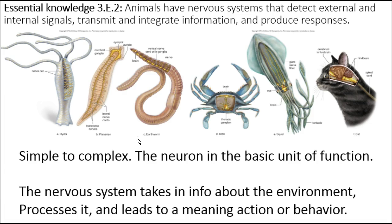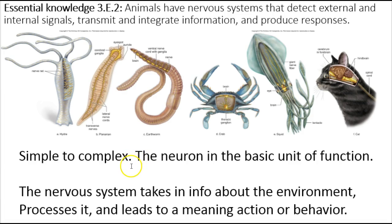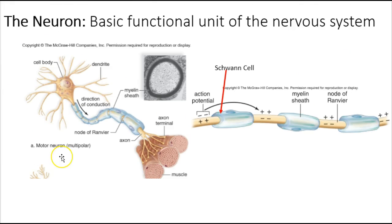Neurons are taking in information — you have sense organs that take in information, communicated to neurons. Neuron will communicate to neuron, and eventually a neuron will communicate with either a gland or a muscle and convey that message. The neuron is the basic unit of function in taking information from the environment and passing it along to create some meaningful behavior.